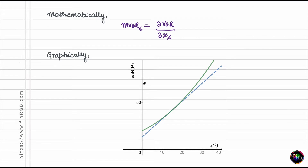Graphically speaking, if I make a plot of how the portfolio VAR changes as X_i changes — keeping the X of the other sub-portfolios constant — then the marginal VAR is basically the slope of the tangent at the current value of X_i. As X_i changes, the marginal VAR keeps changing. This is how you would graphically interpret the marginal VAR.